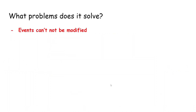to find the current state. So what problems does this pattern solve? One of them is that events cannot be modified or changed. If I want to assert an event, that event cannot be changed.